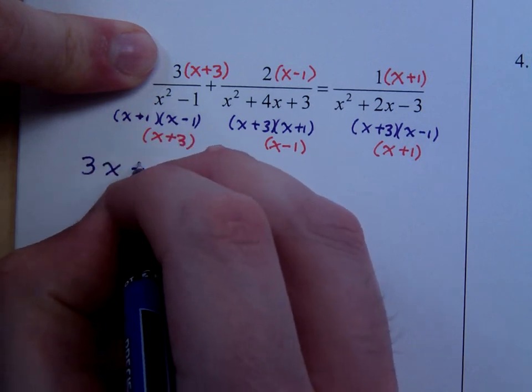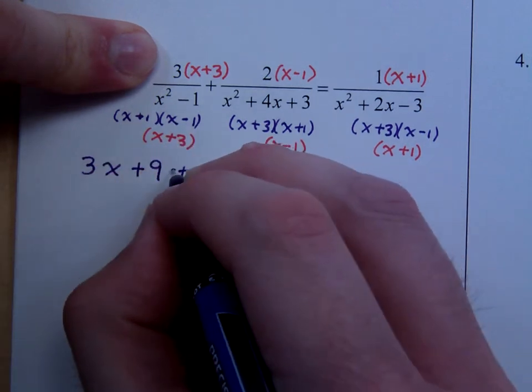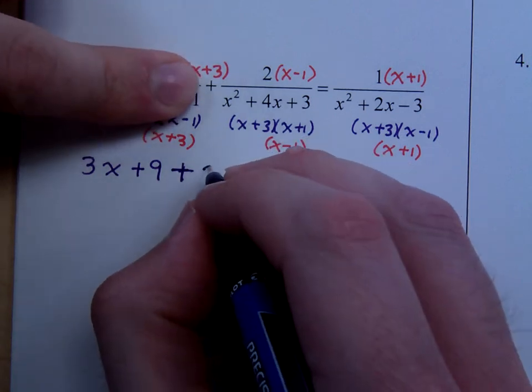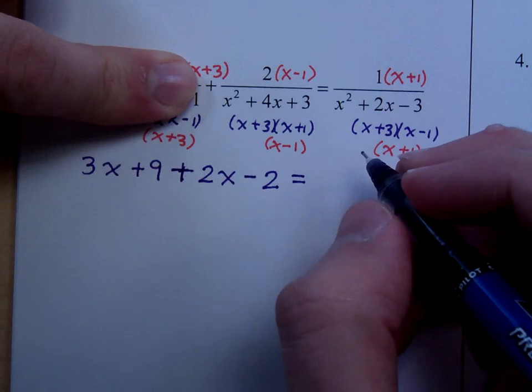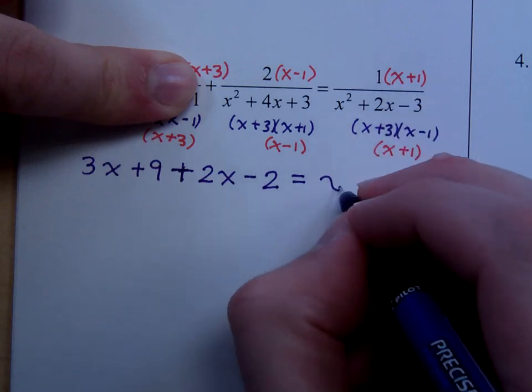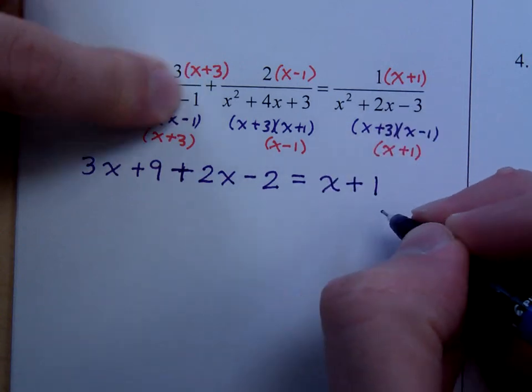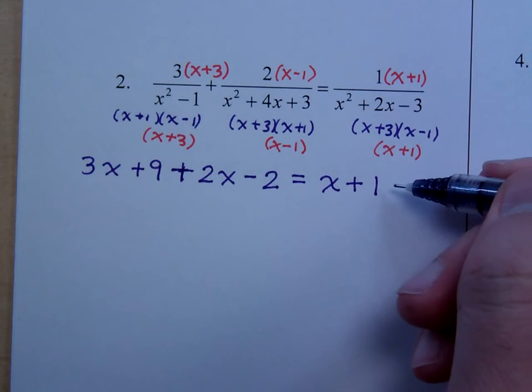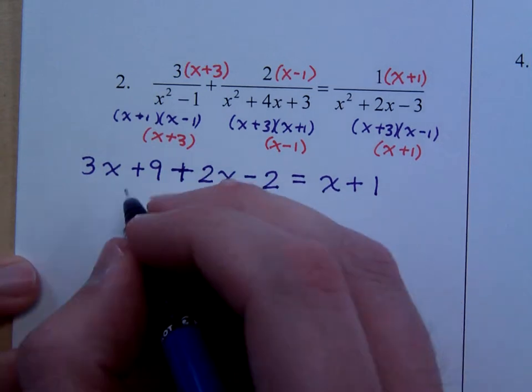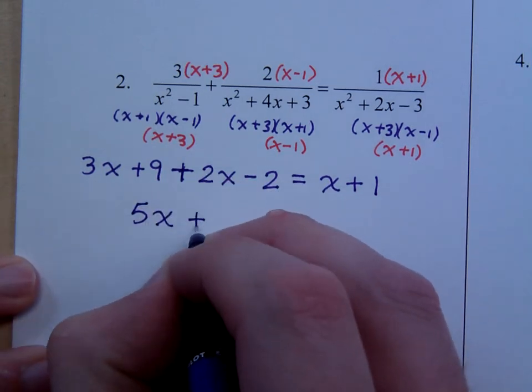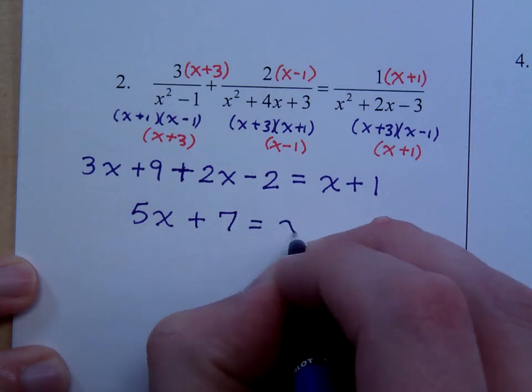That's 3x plus 9. Plus, make sure you watch your signs, it's 2x minus 2 is equal to x plus 1. What we see here is not an equation that's quadratic because there are no squares. It's just a nice linear equation. Combine like terms just to clean it up a little bit. It's 5x plus 7 equals x plus 1.